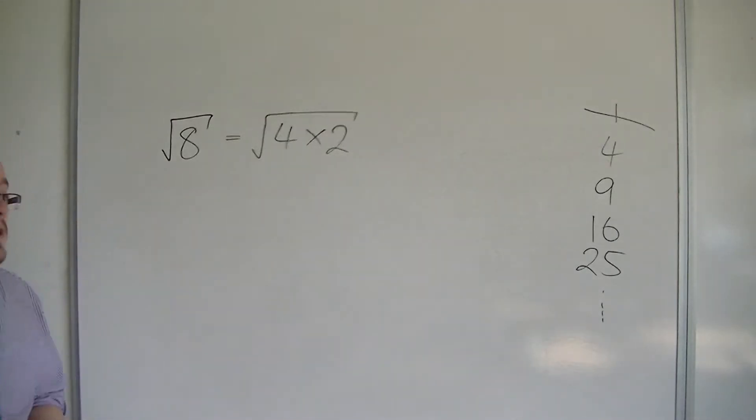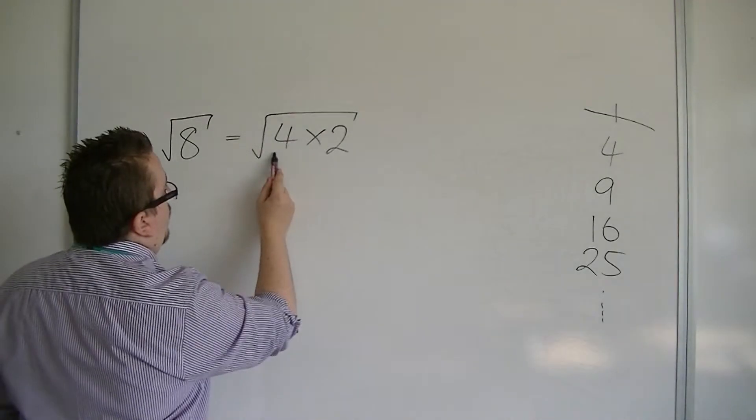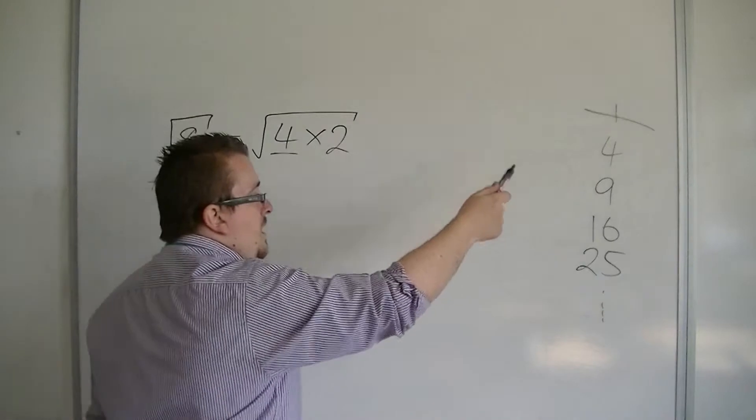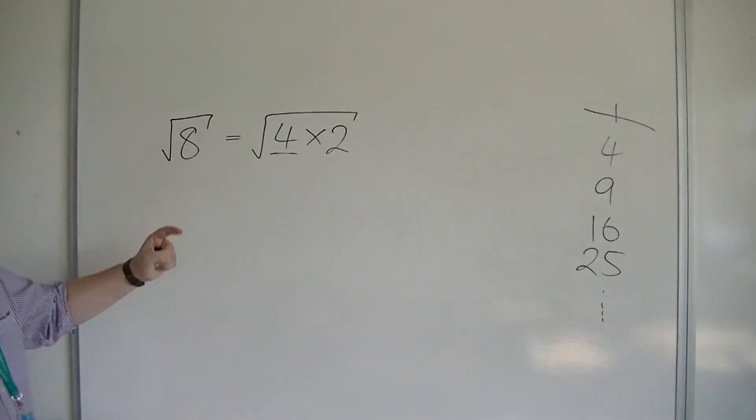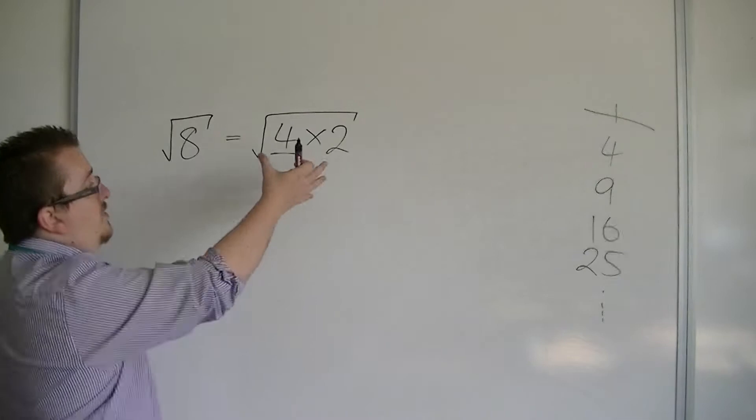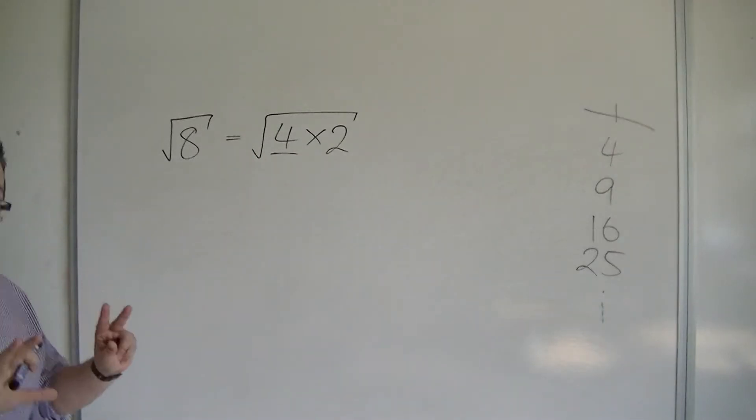Now, what I've identified here is I've looked for a square number, one in my list, that goes into 8. So, 4 goes into 8 twice.